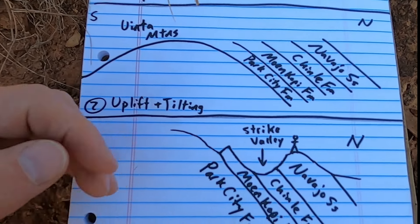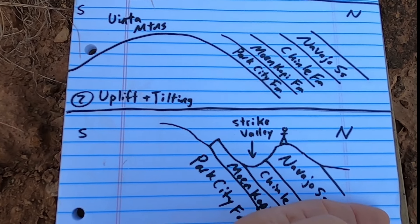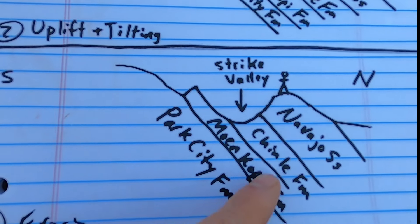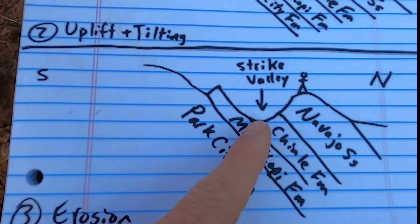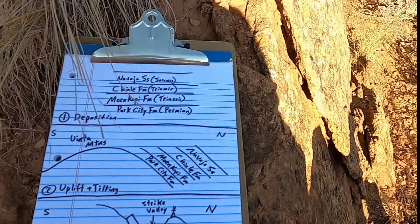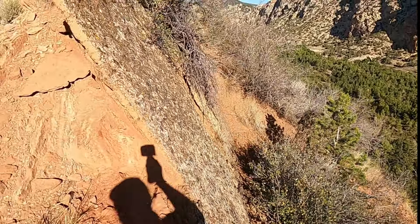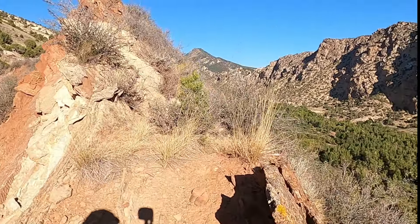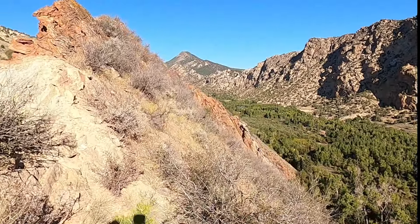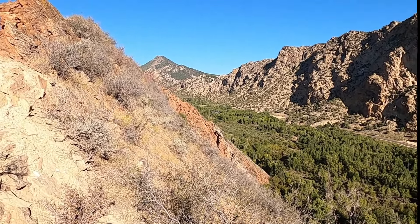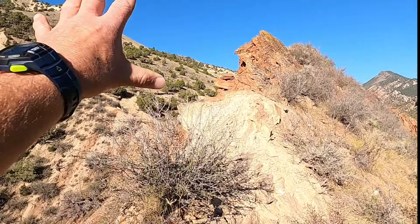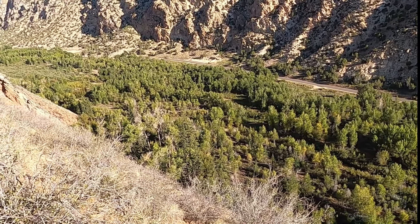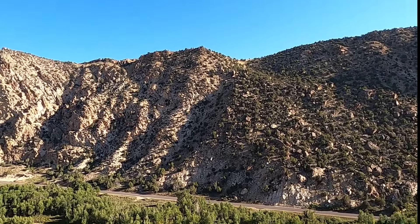With these two resistant layers on the outside, the weaker Chinle Formation has been exploited by Sheep Creek, which has carved a valley through it along strike. You might expect that with uplift in the Uinta Mountains, streams would cut straight to the north making a beeline to lower elevation — but in some places, like here, they actually flow parallel to strike, parallel to the way the units run across the landscape. That's what's known as a strike valley. The Park City and Moenkopi formations form the ridges, the Chinle has been completely eroded to form the lush valley Sheep Creek flows through, and the Navajo Sandstone stands up along the ridgeline.